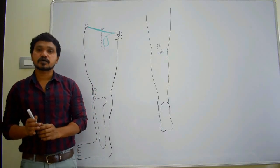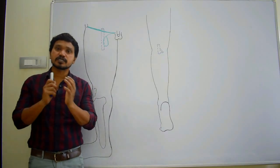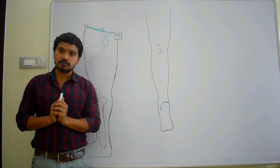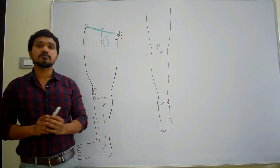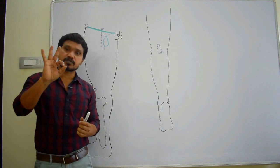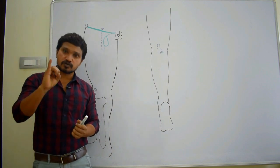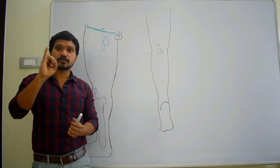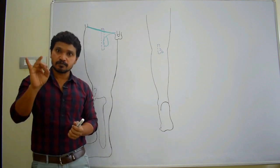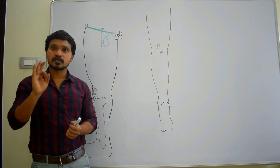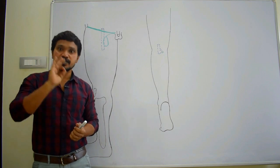In this session, we will discuss about venous drainage of the lower limb. In the lower limb, there will be three types of veins: first, superficial veins; second, deep veins; and third, perforating veins.